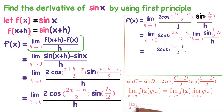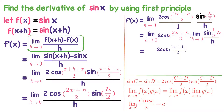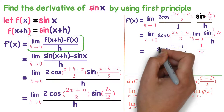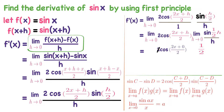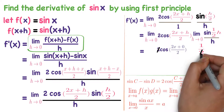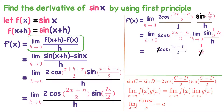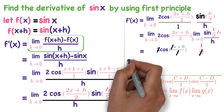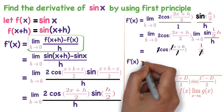We know the formula: limit h tends to 0 of sin(ax)/x equals a. Applying the same formula here, we get 1/2, where a equals 1/2. The 2 in the numerator and the 2 in the denominator cancel, leaving cos x.